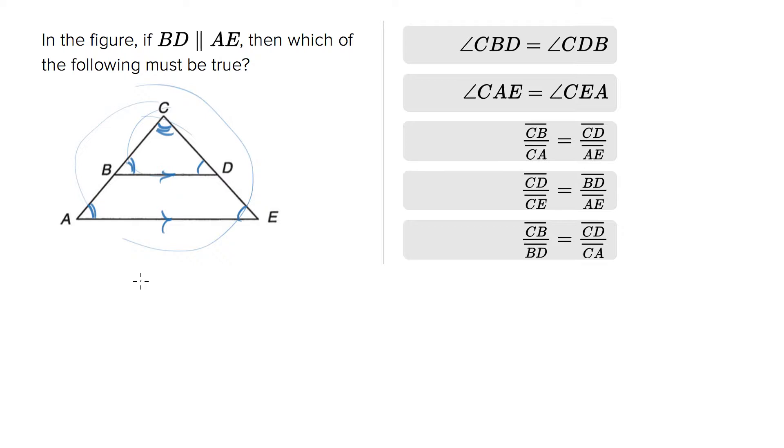Now they make it look as though angle CBD is equal to CDB, but that's not necessarily true at all. In fact, it could be the case that we have a triangle that looks like this, where these angles are not at all close. I'm trying to draw one that's more extreme so you can get a sense of it.